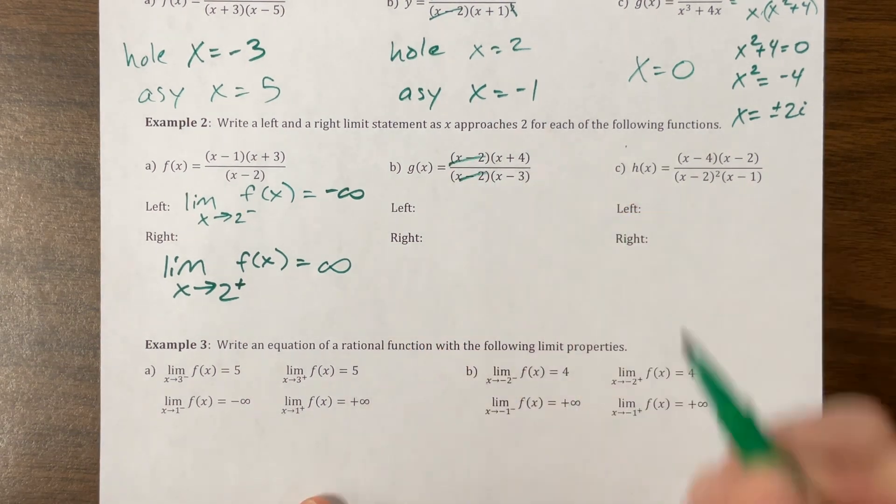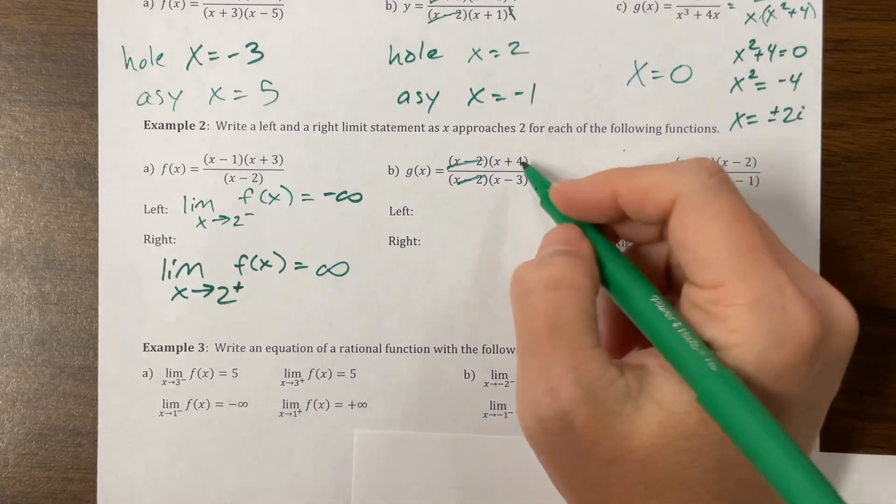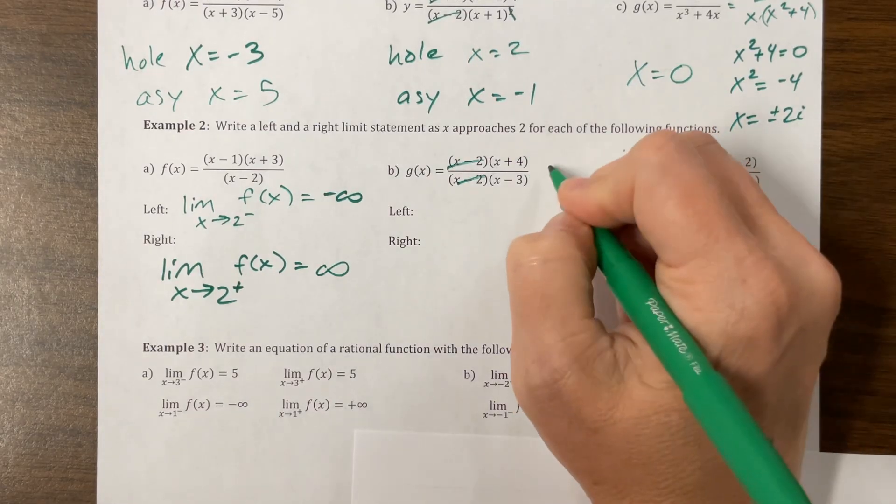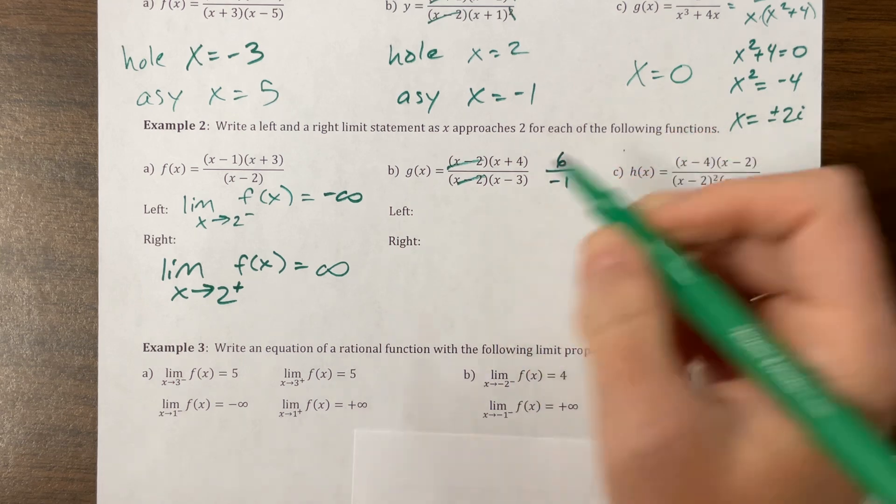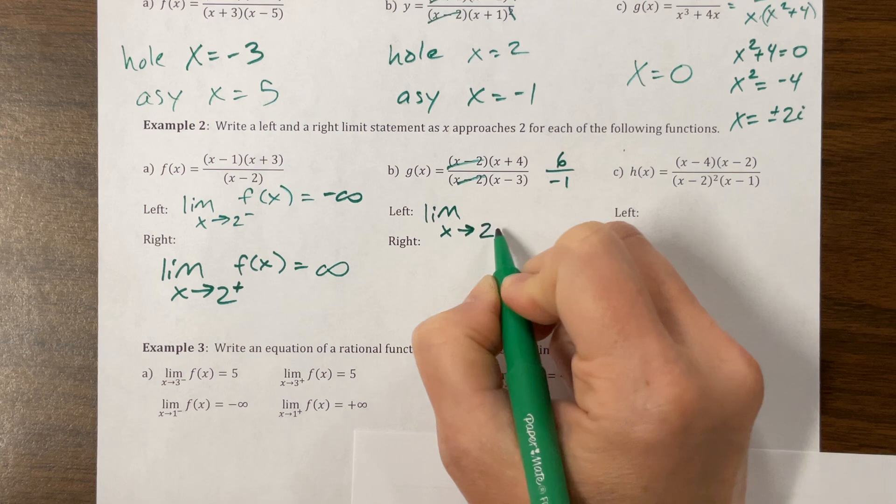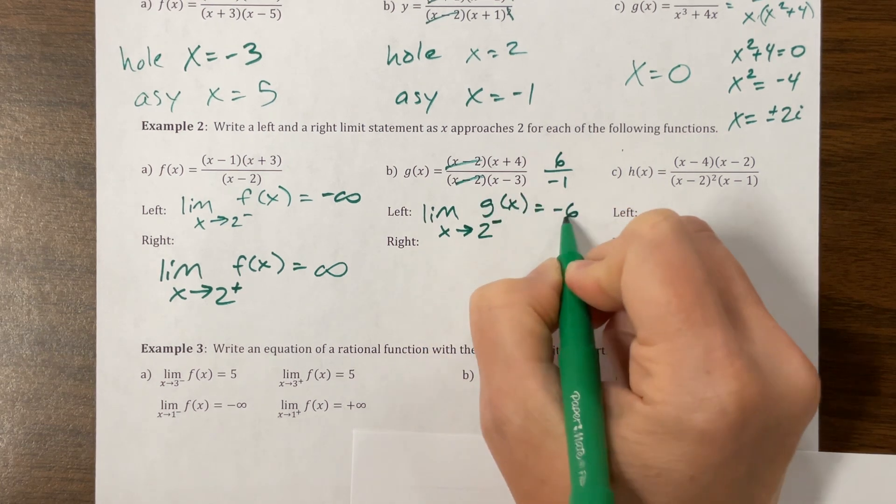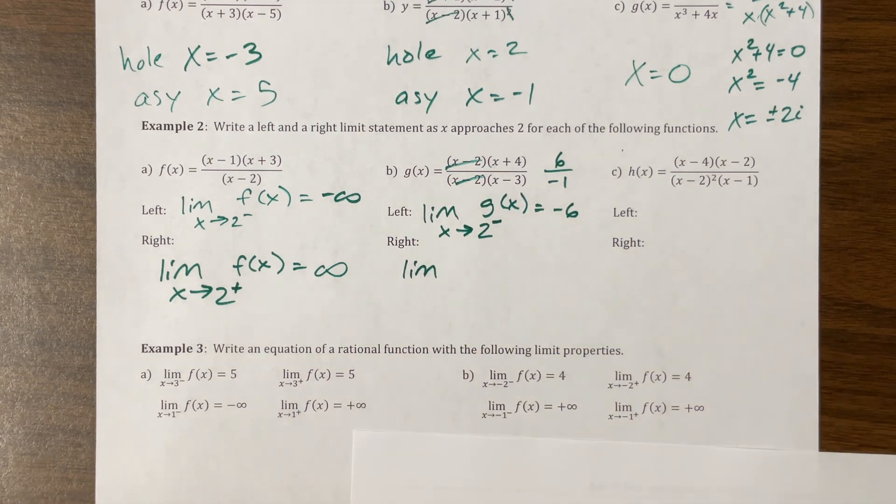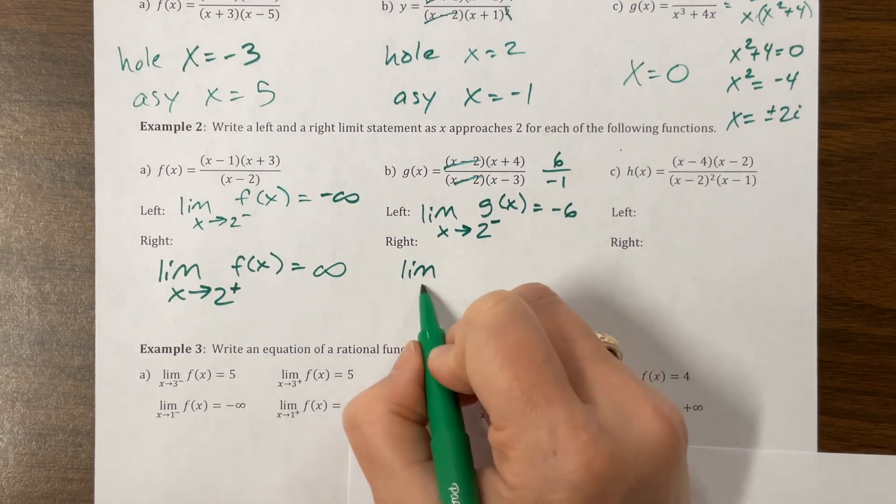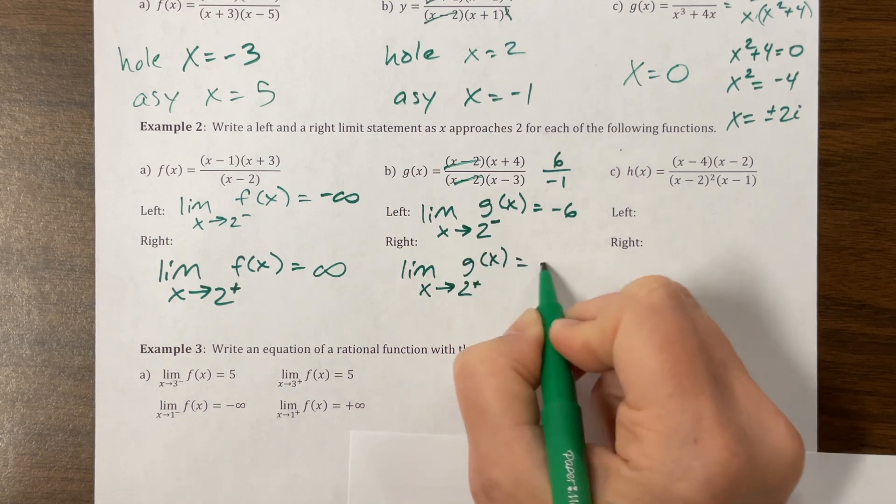Okay, so with this one, 2 is now a hole. It's gone. So what's the value? When I plug in 2, I end up getting 6 over negative 1. So the limit as x approaches 2 from the left of, this is g(x), is going to equal negative 6. And the limit, because it approaches the y value of the hole, as it goes to 2 from the right of g(x), is also equal to negative 6.